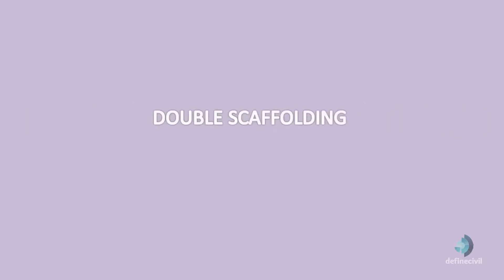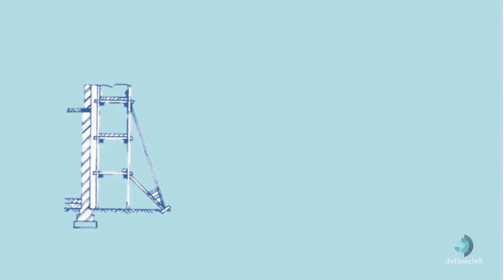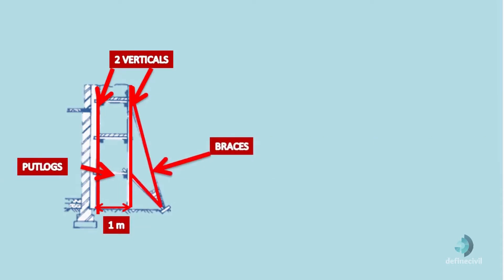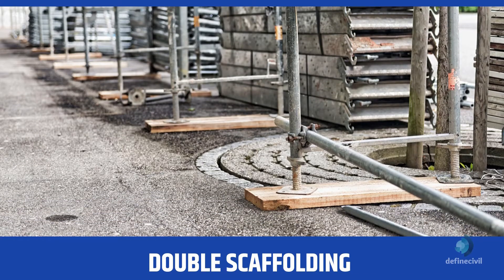Number 2 is double scaffolding. It is generally used for stone masonry, so it is also called mason scaffolding. In stone walls, it is hard to make holes to support putlogs, so two rows of scaffolding are constructed. The first row is 20 to 30 centimeters away from the wall and the other is 1 meter away from the first row. Putlogs are then placed supported by both frames, and rakers and cross braces are added for strength. This is also called independent scaffolding.